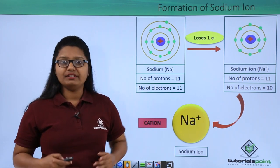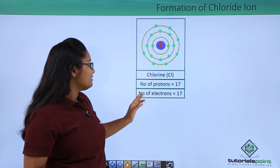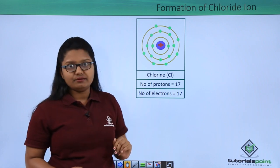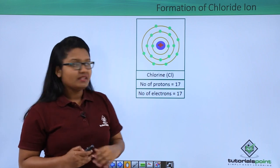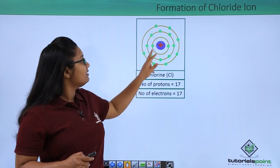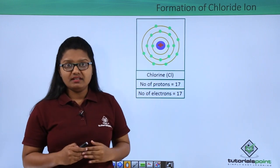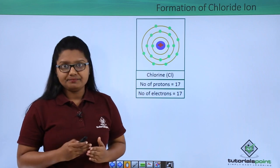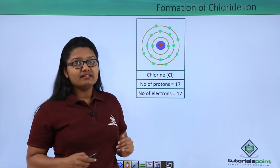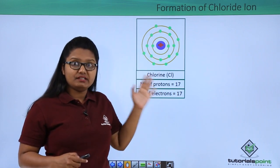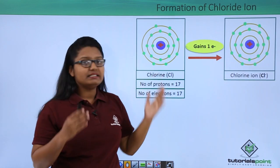Now let us see what is happening in the case of chlorine. A chlorine atom has 17 protons and 17 electrons, arranged in three shells. The two inner shells are completely filled, whereas the outermost shell has seven electrons, meaning it is incomplete. It requires one more electron to be completely filled, so this chlorine atom will capture the electron which was lost by sodium.